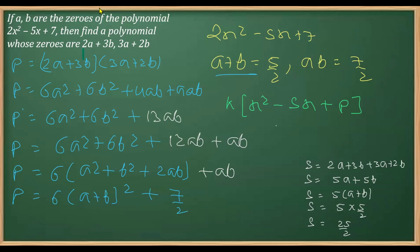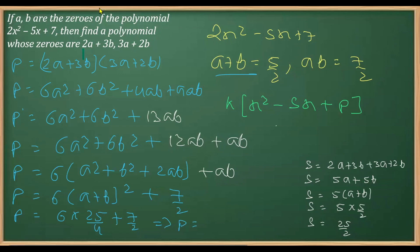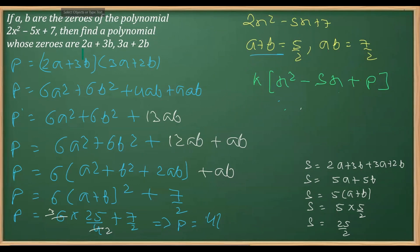Now substituting: a+b = 5/2 so (a+b)² = 25/4, and ab = 7/2. So P = 6×(25/4) + 7/2 = 75/2 + 7/2 = 82/2 = 41. The product of the new zeros is 41.